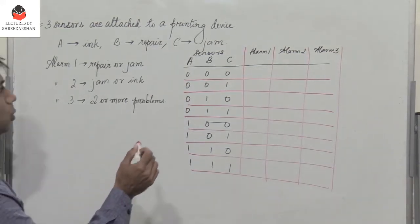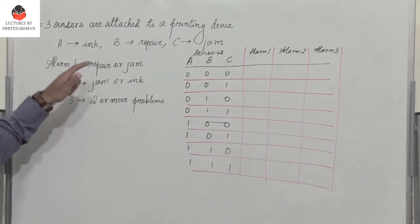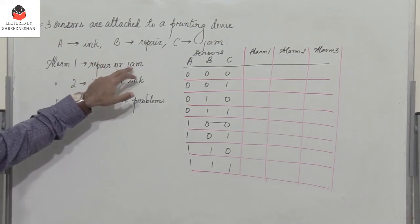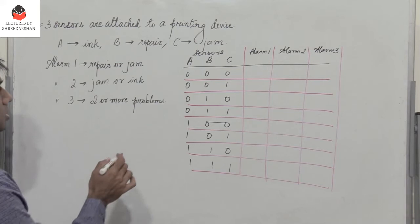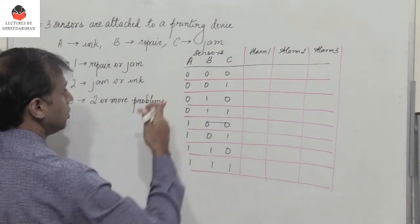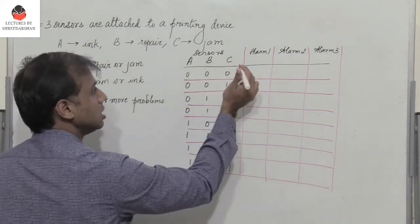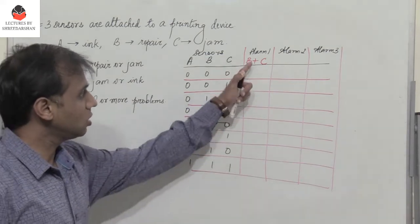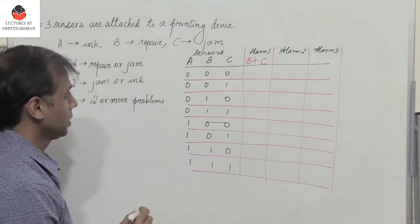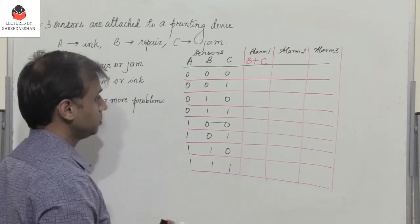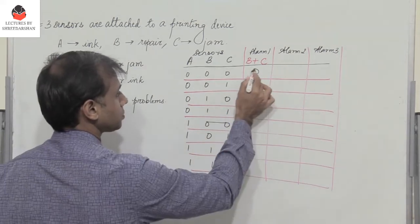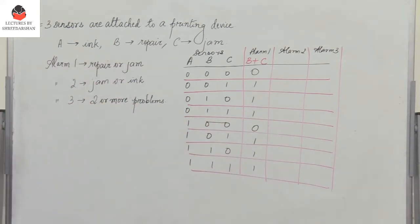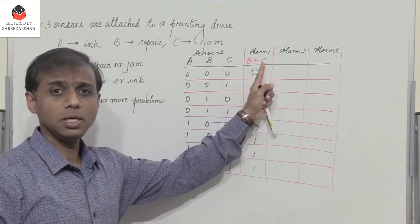When does alarm 1 go high? Alarm 1 goes high if the printer needs a repair or a jam — that is, if sensors B or C go high. So alarm 1 is nothing but B plus C. Filling in the truth table: 0+0=0, 0+1=1, 1+0=1, 1+1=1, and so on. So alarm 1 is simply B or C.